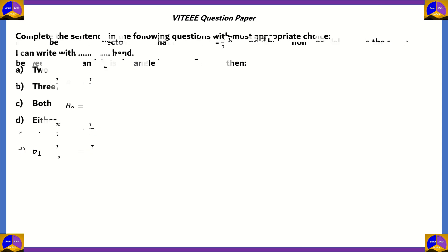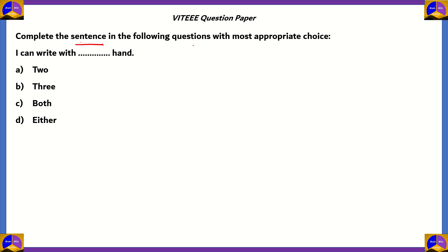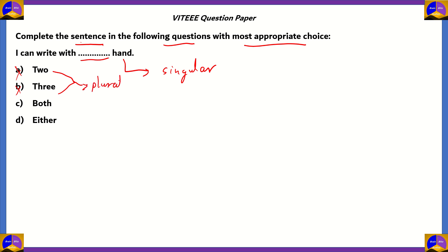Now let's look at the question for English. Complete the sentence with the most appropriate choice: 'I can write with ___ hand.' The options are: two, three, both, or either. The word 'hand' is singular, so we need a modifier that works with the singular form. Options A and B — two and three — are plurals, so the noun they modify would also need to be plural. You cannot say 'I can write with two hand' or 'three hand'; you'd need 'hands.' So options A and B are incorrect.